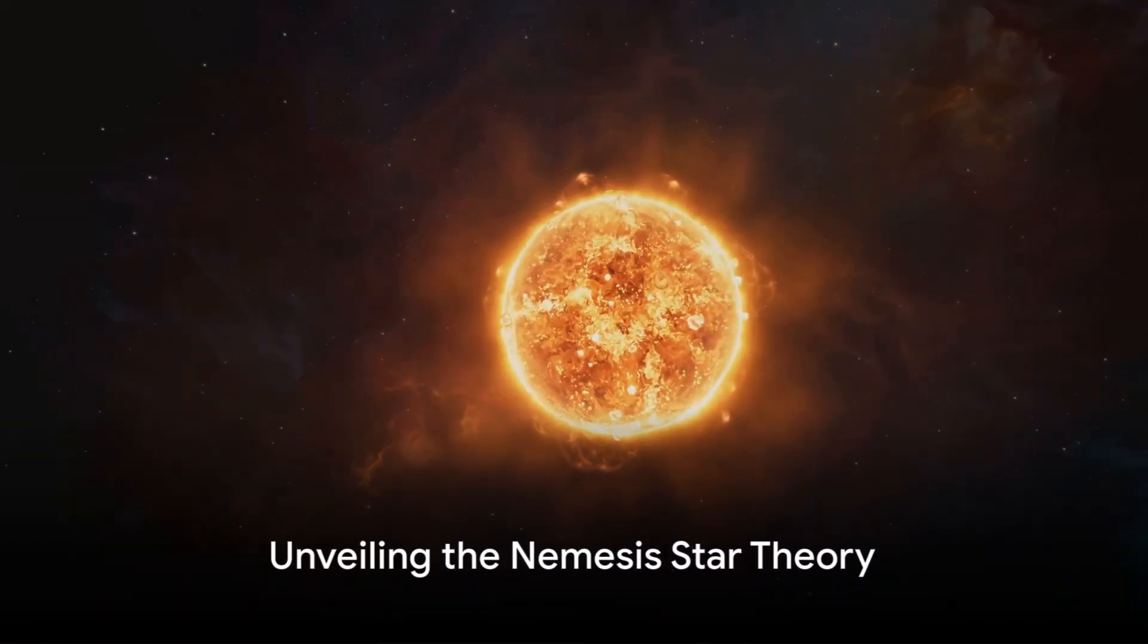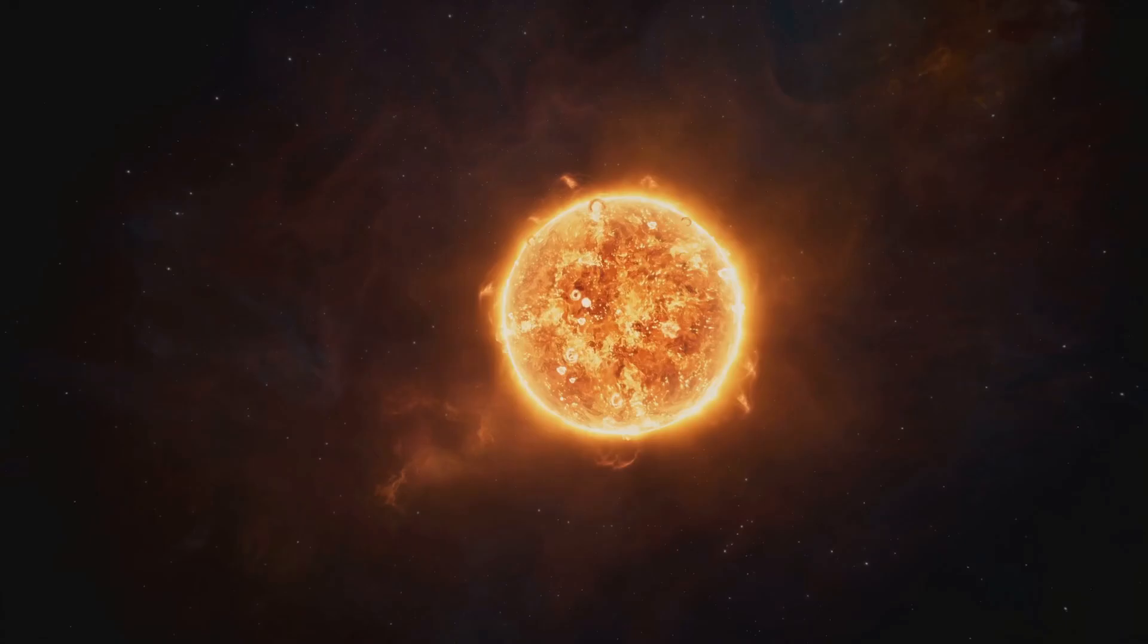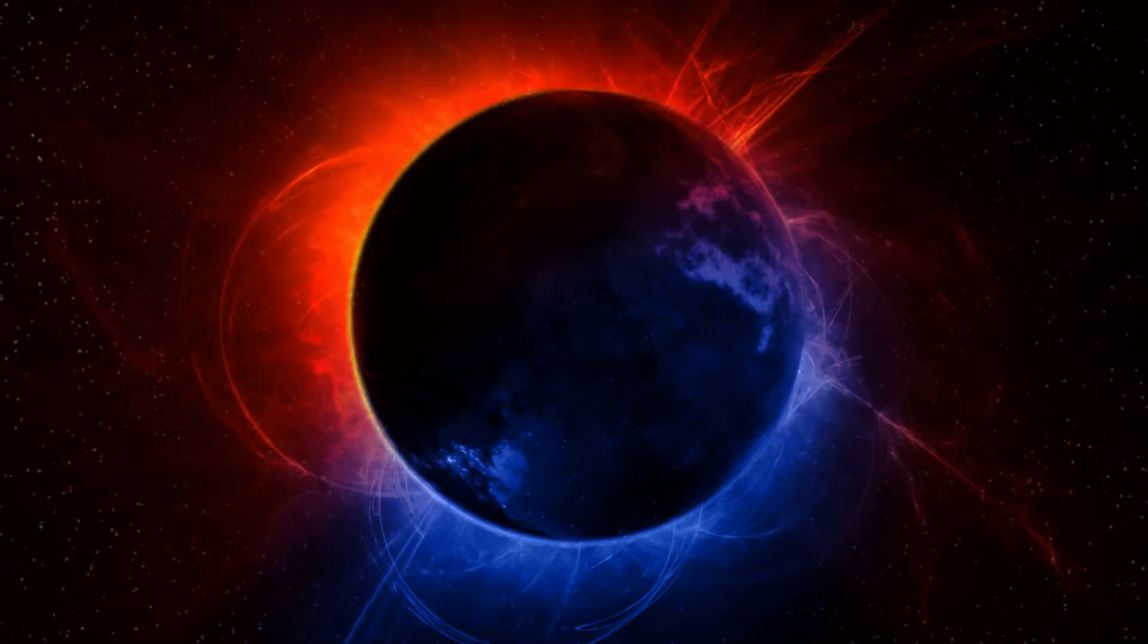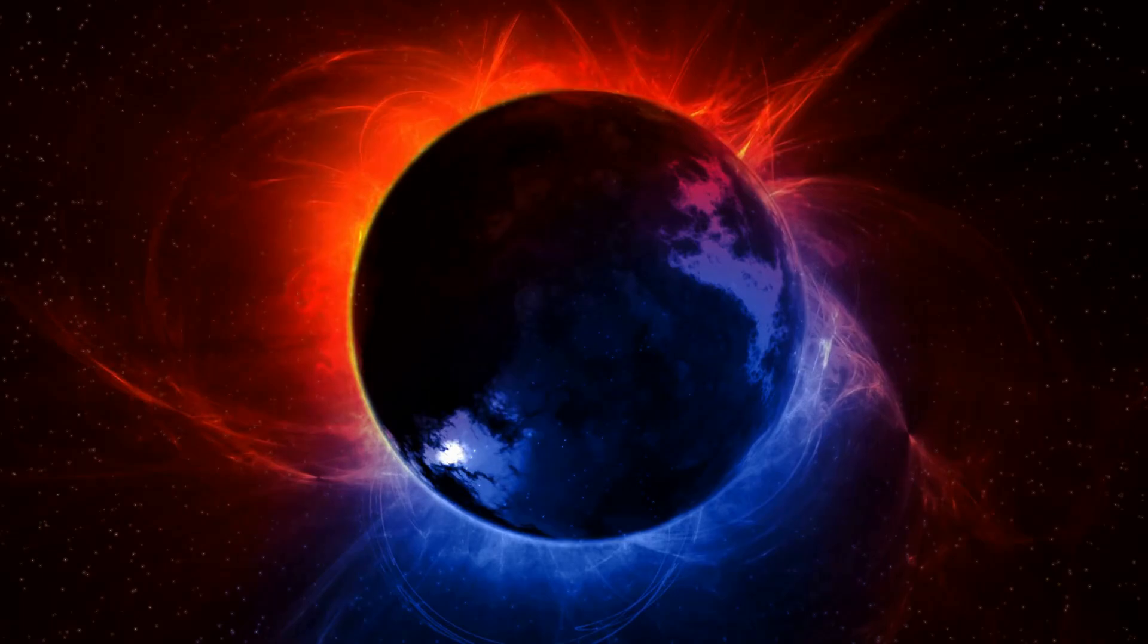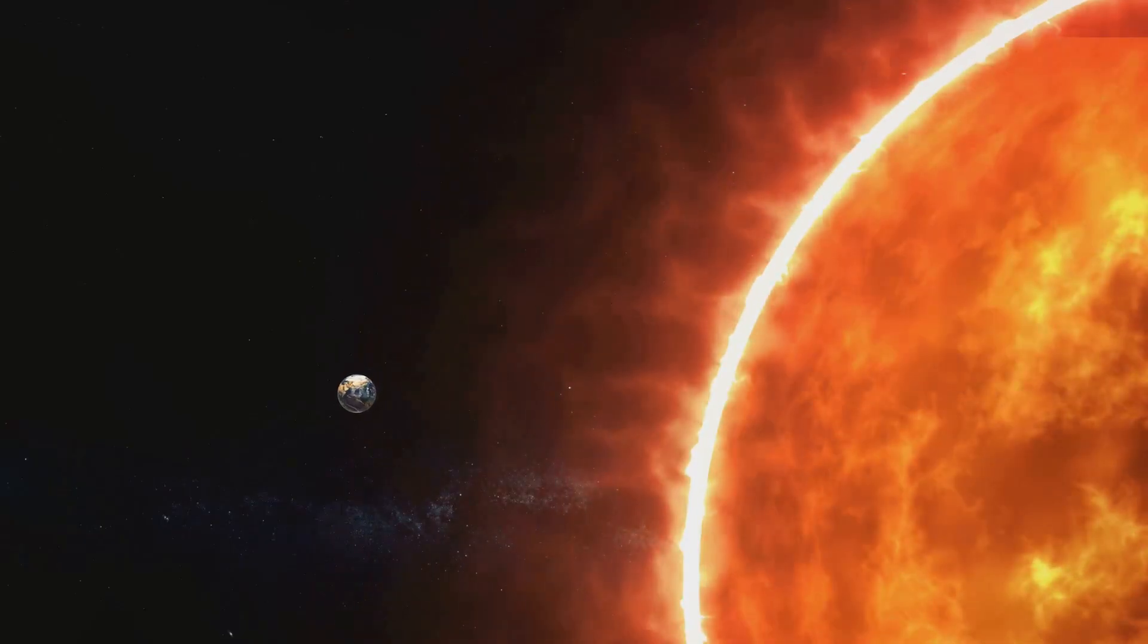The Nemesis Star, also known as the Death Star, is a hypothetical red or brown dwarf star in a highly elliptical orbit around our Sun. The theory proposes that this celestial body lurks in the outermost reaches of our solar system, creating a binary system with our Sun.